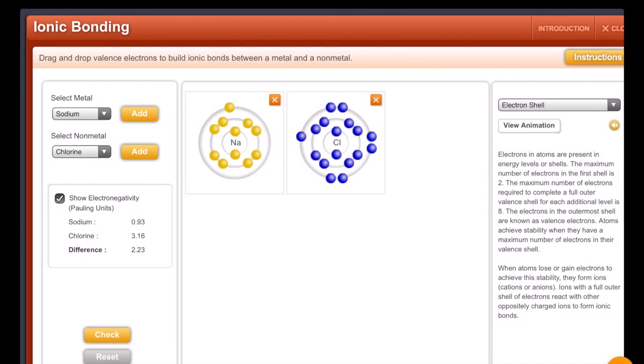drag and drop valence electrons to build bonds. So I see how this yellow sodium has an extra electron. I'm pulling it over and I'm going to put it on this chlorine because it needs one. And I see now the sodium looks stable with eight in its valence shell and the chlorine looks stable. And now I'm going to press check. And it says, you have correctly transferred the electrons. Now view an animation of the ionic bond and the crystal lattice structure.